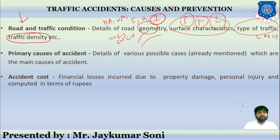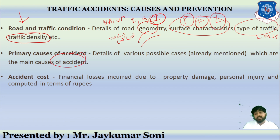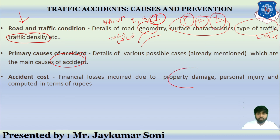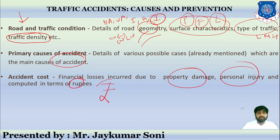We then collect details of the primary causes of the accident — the various possible causes already discussed as main causes. Finally, accident cost is collected: financial losses incurred due to property damage and personal injury, computed in terms of rupees.